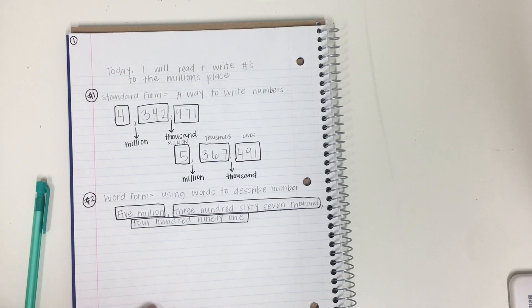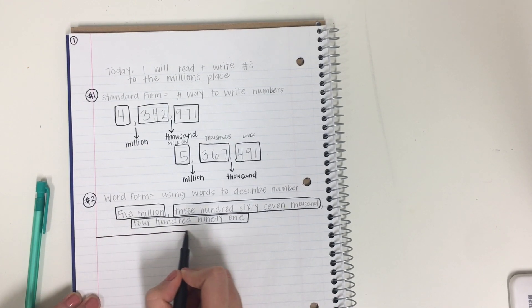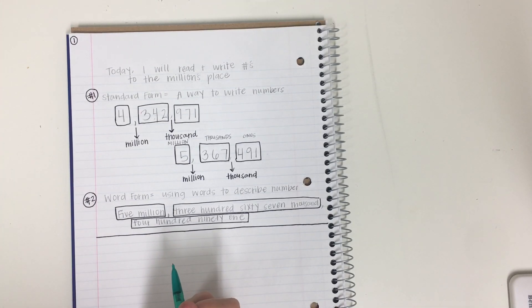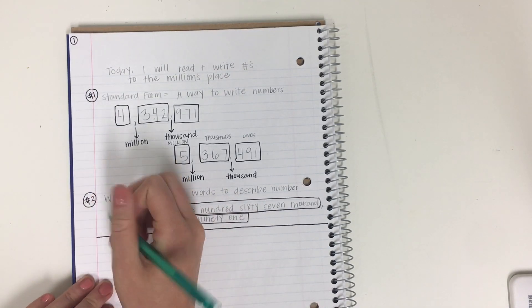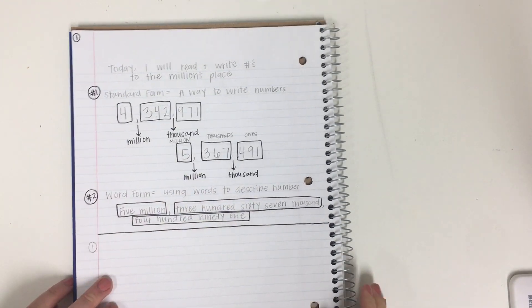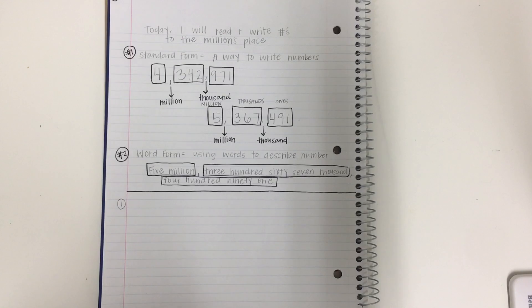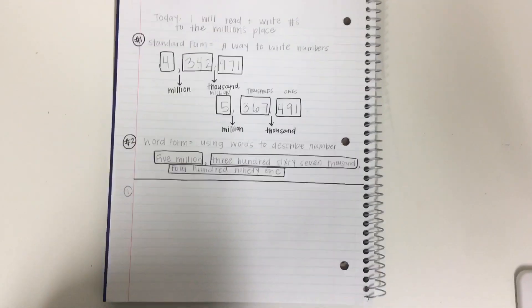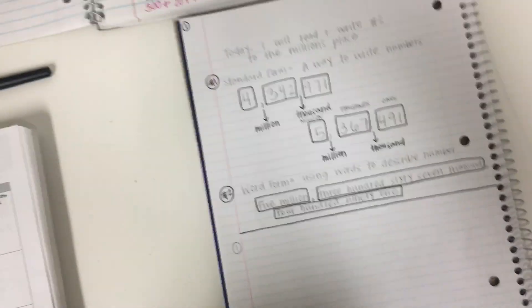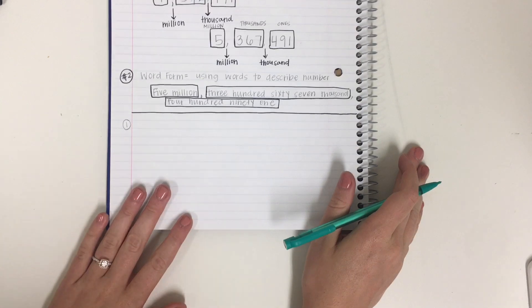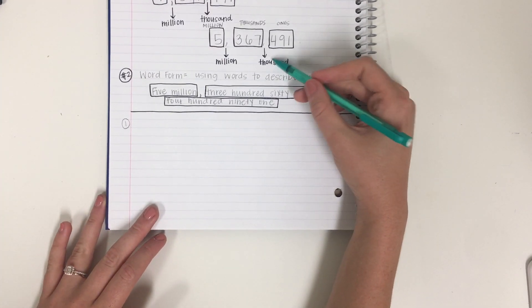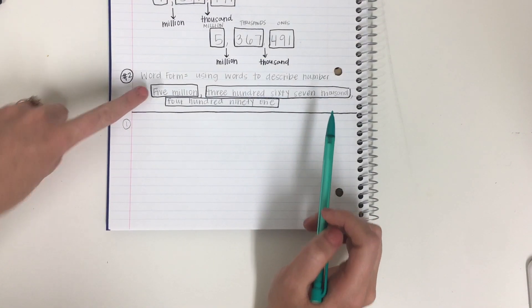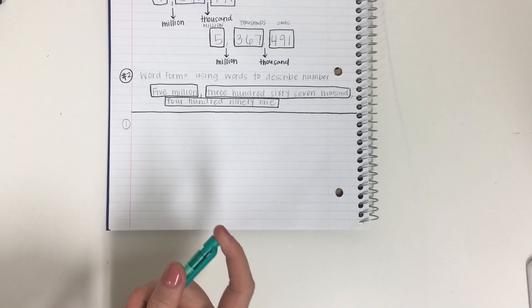Now tomorrow we're going to work on expanded form. But today I just want you to draw your line. And I'm going to give you two problems to bring to class tomorrow. That I want you to work on tonight. Here is your first problem. So do a one. Circle it. Okay. So these are going to be the two problems that you're going to work on tonight. And I want you to use the boxes and use the arrows if you need to.